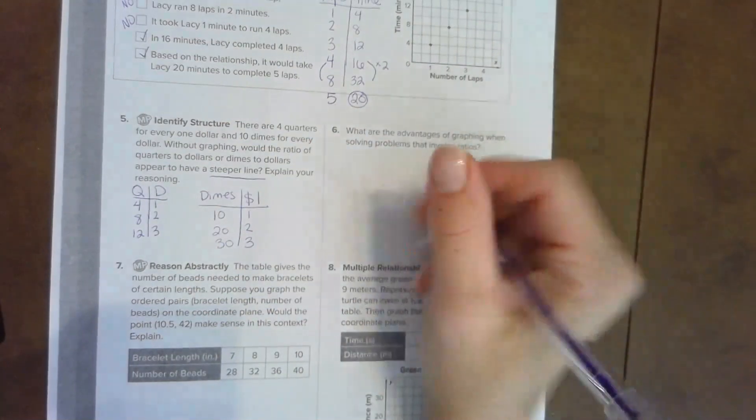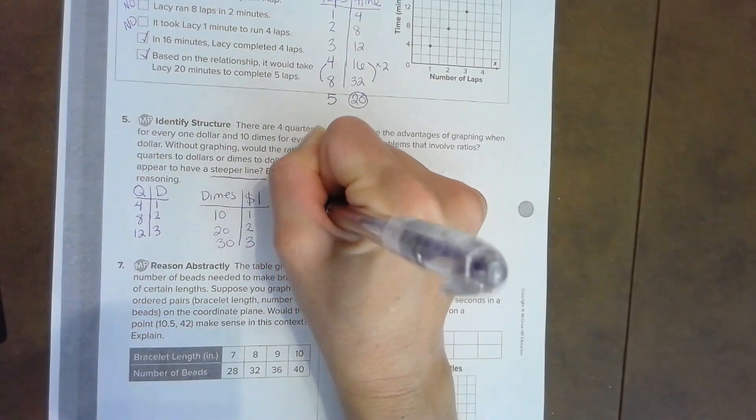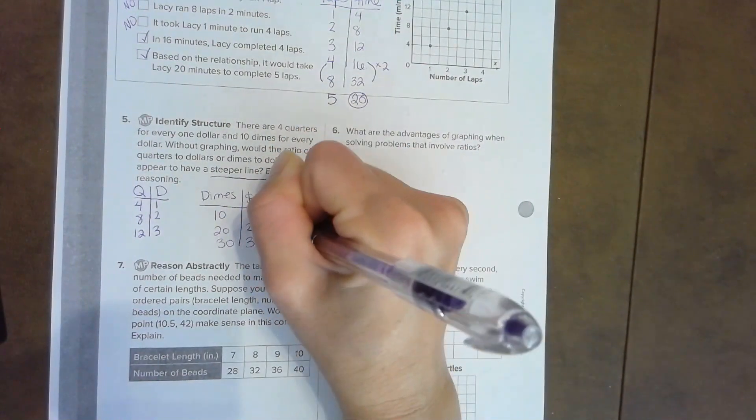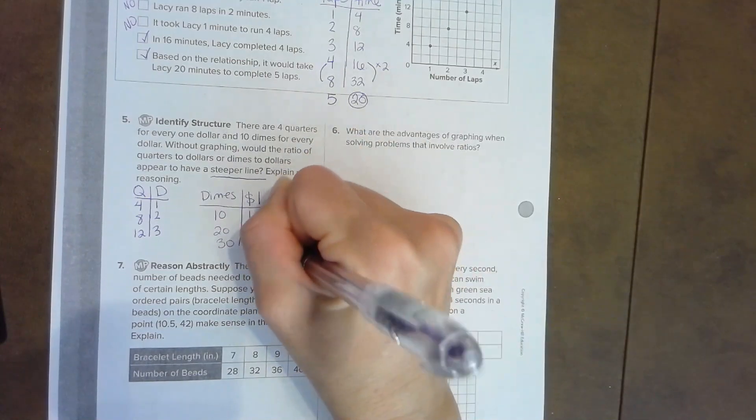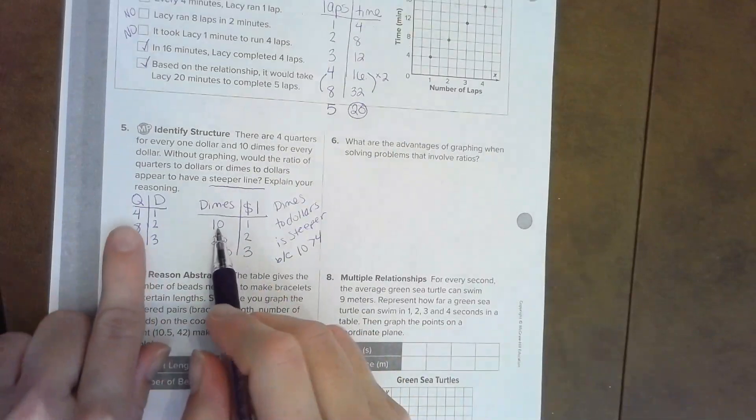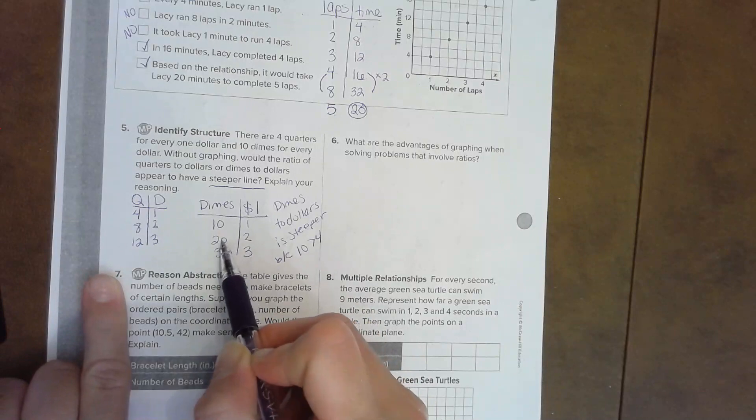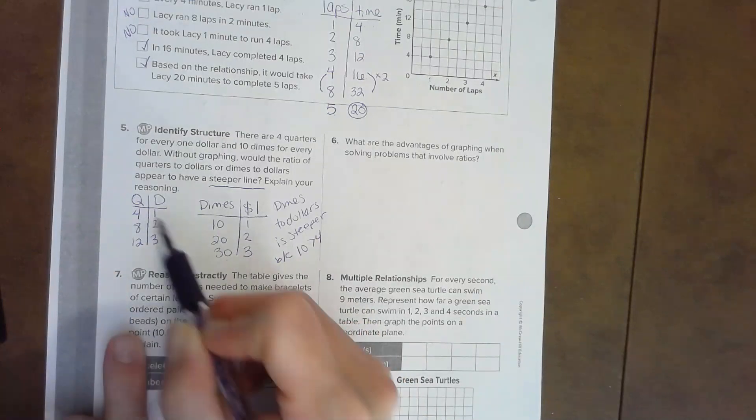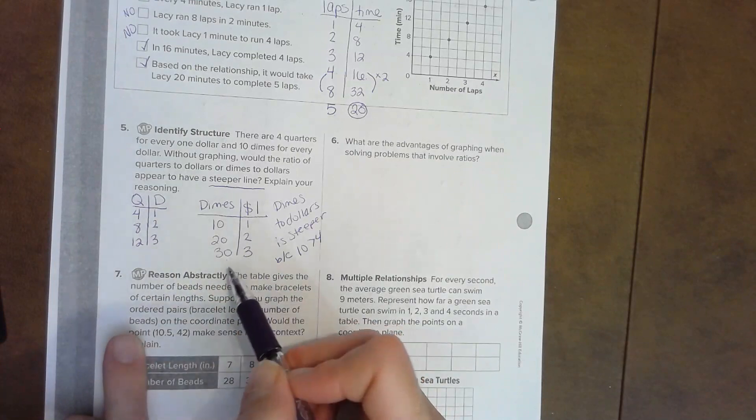Dimes to dollars is definitely going to be steeper. Dimes to dollars is steeper because ten is bigger than four. The ten is bigger than four, so this is going ten and then jumping to twenty, then jumping to thirty. Well, this is staying a little tighter together. This is going to be steeper.